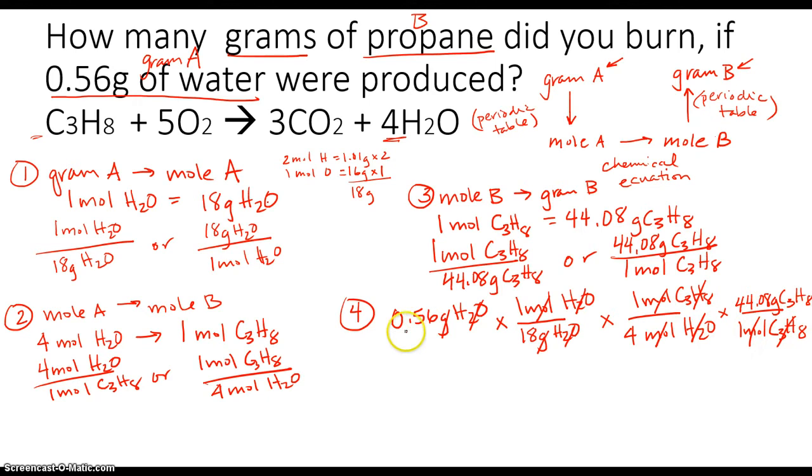So what I'm mathematically going to do is I'm going to multiply 0.56 times one, times one, I'm just multiplying the top, times 44.08 grams. Then I'm going to push the equal sign on my calculator. And then I'm going to divide it by 18 times four times one. And my answer should work out to be 0.343 grams of C3H8.